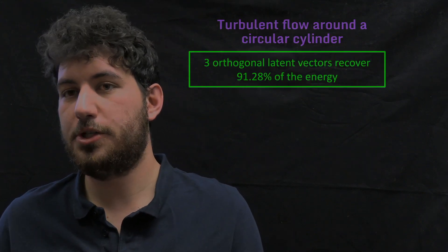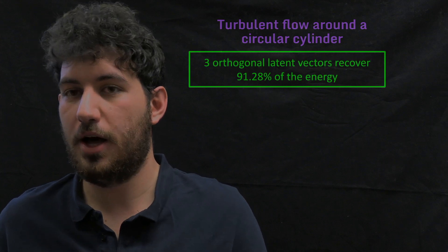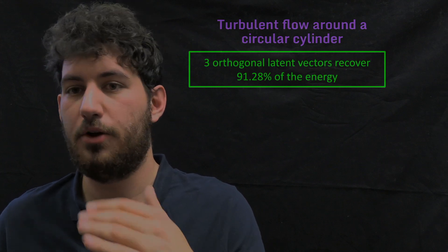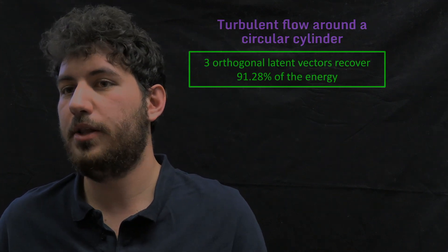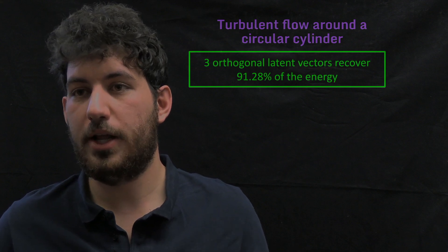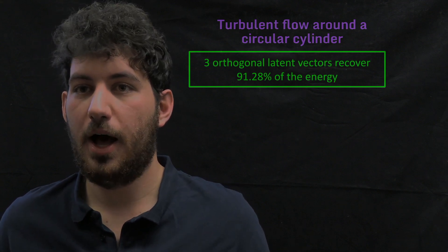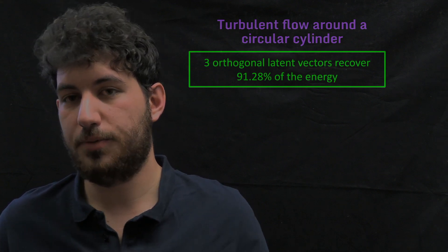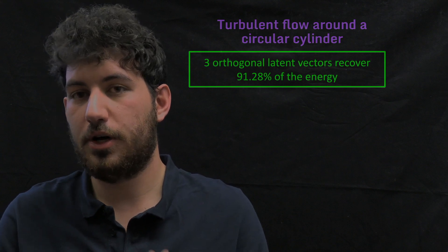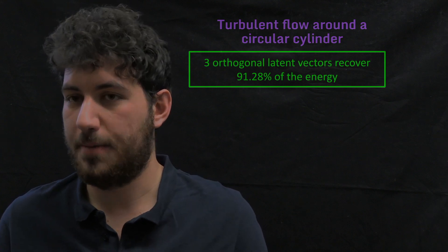And with this model, it's possible to reduce 1,600 rows of B to three orthogonal latent vectors that actually recover nearly 92% of the energy. And these orthogonal latent vectors, as we'll see at the end of the video, they also keep all the flow temporal dynamics.